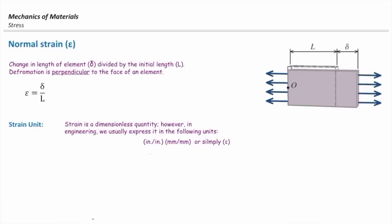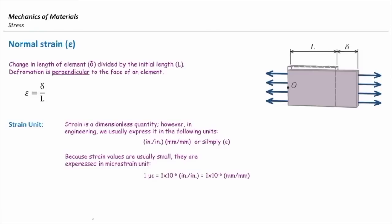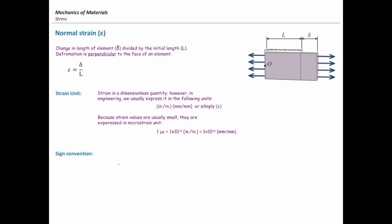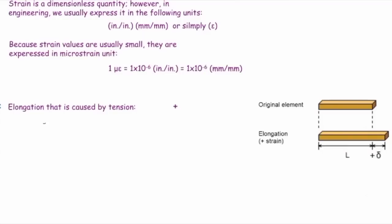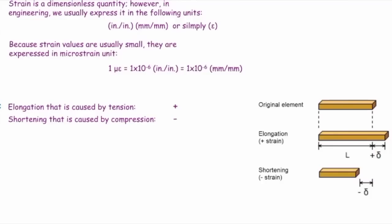Or we simply use epsilon. Strain values are usually very small, so we need to magnify them. We multiply them by one million and call that unit microepsilon. One microepsilon is equal to one times ten to the minus six. The sign convention follows the same convention we had for stress. Tension was positive for stress, so elongation is positive strain. If an element is in compression, we expect contraction, and that is negative strain.